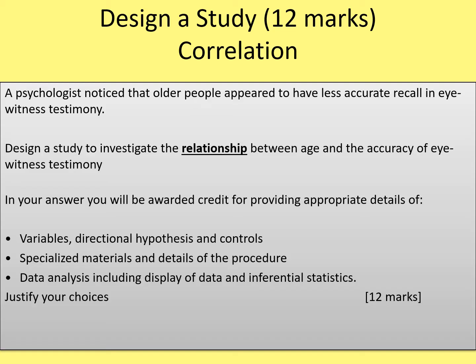Design a study to investigate the relationship between age and the accuracy of eyewitness testimony. In your answer you will be awarded credit for: variables, directional hypothesis and controls, specialized materials and details of the procedure, and data analysis including display of data and inferential stats — justify your choices. Those bullet points are what guide you, because that's how you're going to get the majority of your marks.